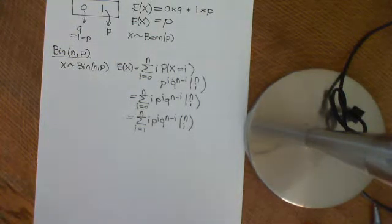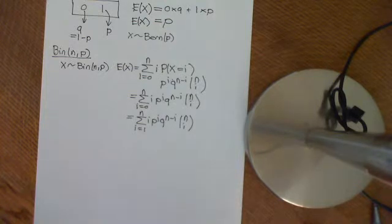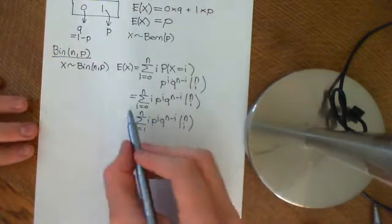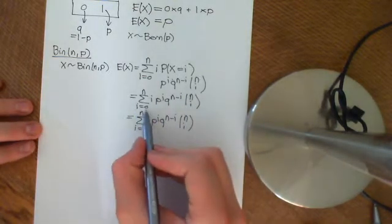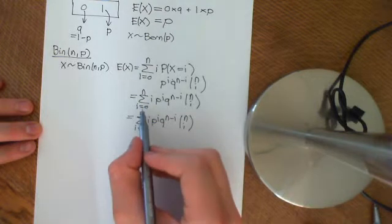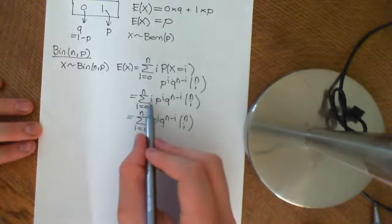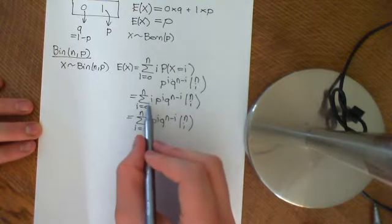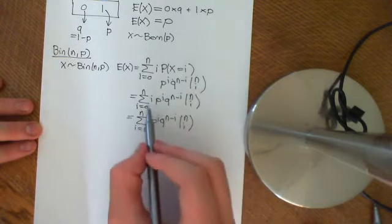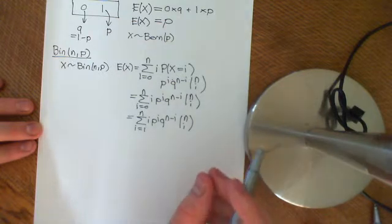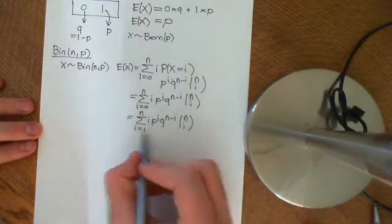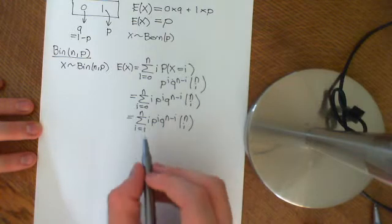We are in the process of calculating the expected value of a random variable which is distributed binomially. The first thing we need to note is in this sum, we can drop the summation for i is equal to 0, because when i is equal to 0, that piece of the sum contributes absolutely nothing. So we might as well just sum from i is equal to 1 to n.